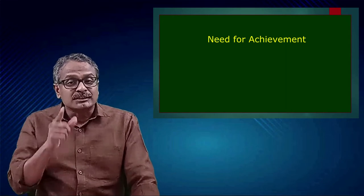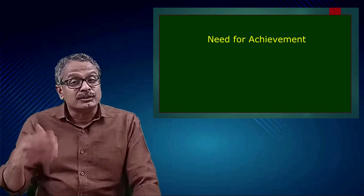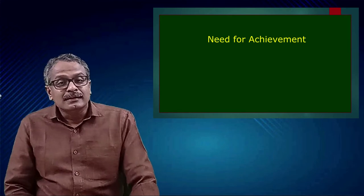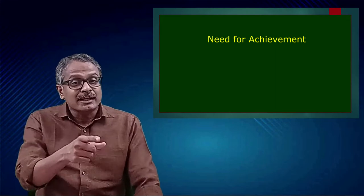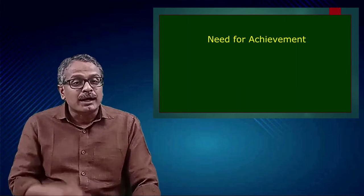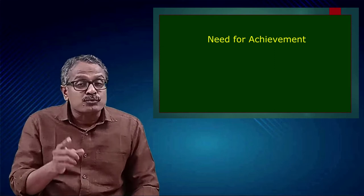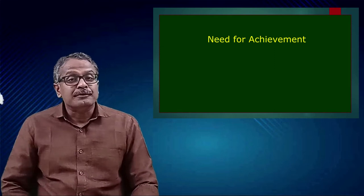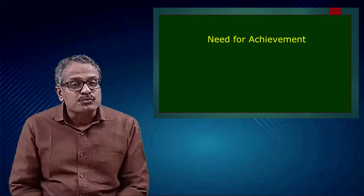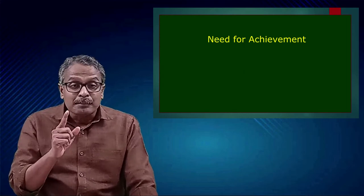You might have noticed some people who claim they can do certain tasks better than others, or friends who say they can teach a topic better than the teacher did. Such persons have higher needs for achievement — they are the people who enjoy their achievements. Such people perform things well and wish to get rapid feedback on their performances. When they get a favorable feedback, they get motivated and it leads them to better performance.